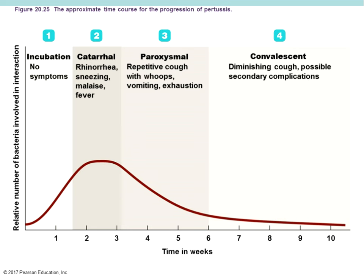The paroxysmal stage begins when the ciliary action of the tracheal cells is compromised — they can't work anymore. A large amount of mucus is secreted but the cells can't move it out. The body triggers deep coughs, which produce that distinctive whooping sound as air rushes into the congested trachea. Every day the patient has these severe coughing spells, often ending in exhaustion. This phase can last two to four weeks, and the coughing can be so severe that oxygen exchange is critically limited, causing people to turn blue and potentially asphyxiate.